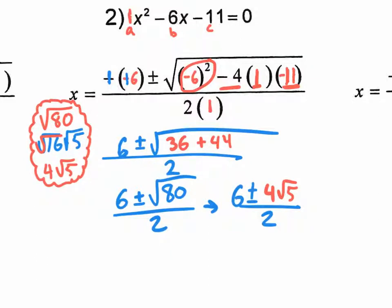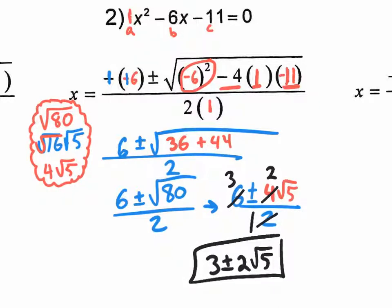Now at this point you can't really add or subtract four square root of five with six. You have three terms — six, four, and two — and they're all divisible by two. So that's how we're going to reduce this fraction: we reduce everything by two. Six divided by two is three, four divided by two is two, two divided by two is one. So there's our answer: three plus or minus two square root of five over one, but the over one is not necessary. So it's just three plus or minus two square root of five. That's your answer for number two.